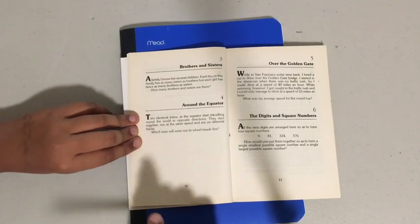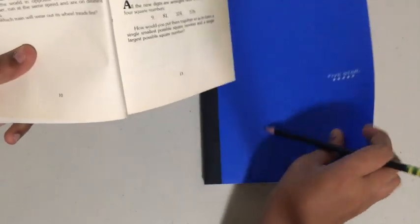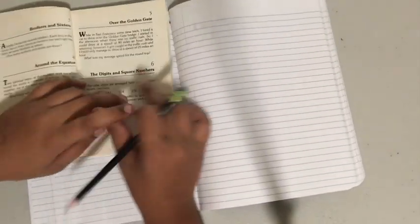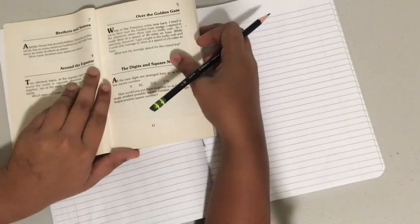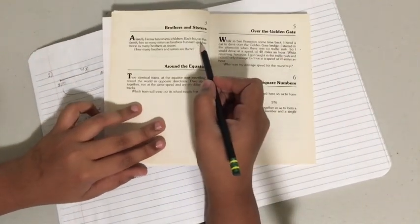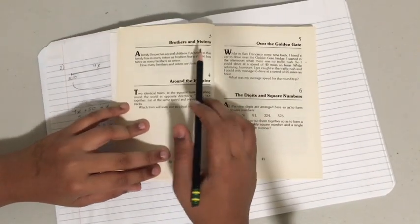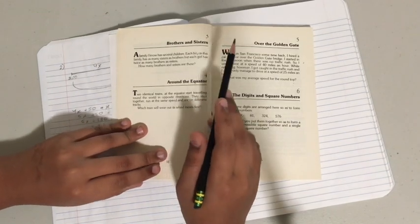So this problem is pretty easy. We just need to use a little bit of logic. So they say each boy in this family has as many sisters as brothers.